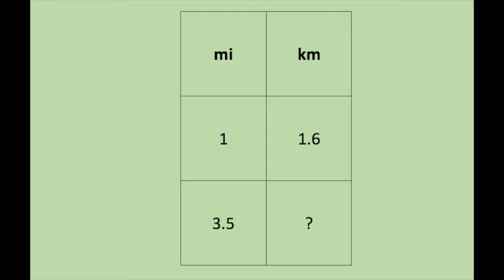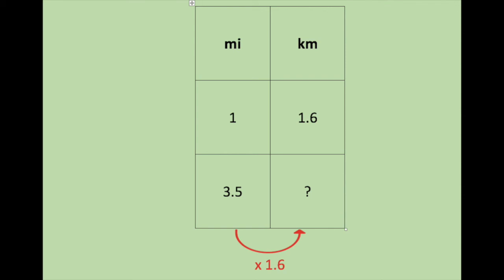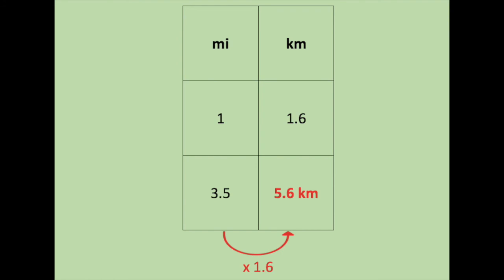Example 1: 3.5 miles is how many kilometers. Set up your ratio box. Miles, kilometers. The rule or the key that we've learned is one mile is 1.6 kilometers. And underneath there, we fill in the specifics for this question. Given: 3.5 miles. So under miles I write 3.5. And the question is, how many kilometers is this? Look at the key. From 1 to 1.6, I have to multiply by 1.6. So I do 3.5 times 1.6 is 5.6 kilometers.